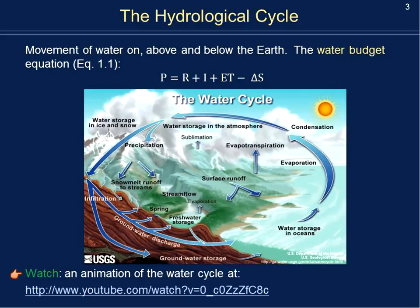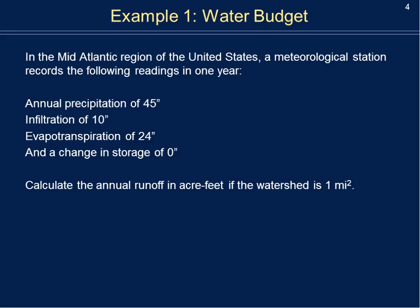Now I'd like to do an example where we calculate the water budget. We'll often use the units of acre-feet — it's a slightly odd unit, but technically considered a volume, because the acre is a square footage area and feet is the height, giving us a volume. I recommend you pause the video after I set up the question and see if you can solve each piece. The question asks: in the mid-Atlantic region of the United States, a meteorological station — a gauge station at a permanent fixed location with a known latitude, longitude, and typically elevation — records the following readings in one year.